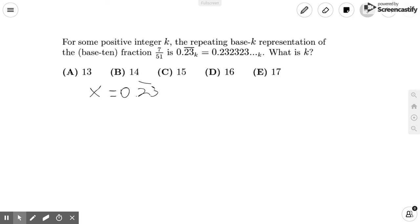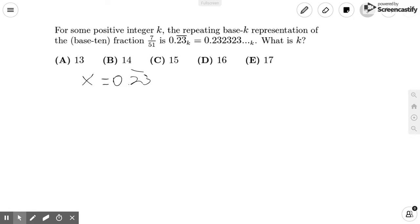Now, remember when we were converting decimals from repeating decimals into base 10 fractions? Let's say we had the value 0.35 repeating in base 10. What we would do is we'd multiply by 100, so we get 35.35 repeating equals 100x.